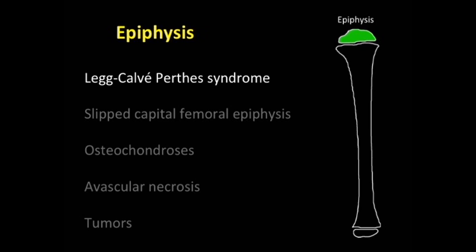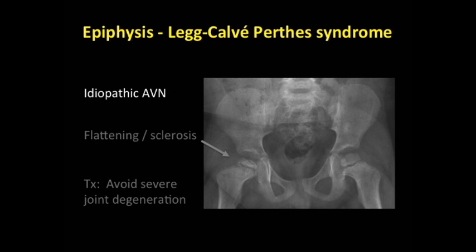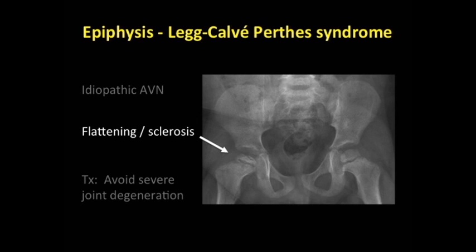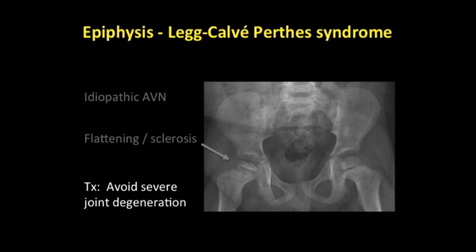Let's start with Legg-Calvé-Perthes disease, LCP or Perthes. This is idiopathic avascular necrosis that occurs in young children. Look for flattening and sclerosis of the epiphysis — usually it's on one side. The whole goal of treating these children is to avoid the long-term consequences of avascular necrosis, which is severe joint degeneration, immobility, and disability.